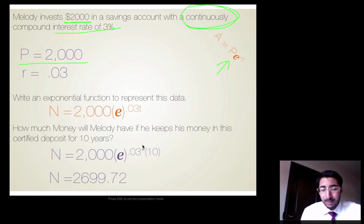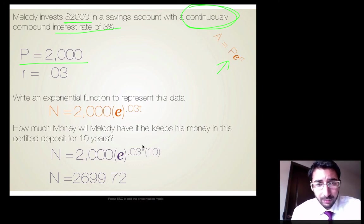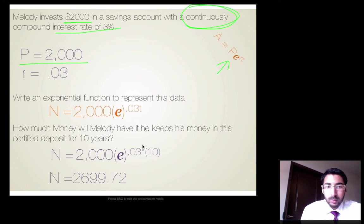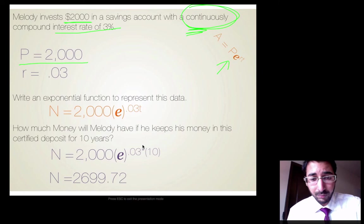Write an exponential function to represent this data. Well, we don't know what N is because we don't know what our final amount is. And we're going to set that equal to our principal, 2,000 multiplied by E because we know it's being continuously compounded. And it's going to be raised to the rate multiplied by the time. We don't know the time yet, but we do know what the rate is. And the rate is .03. So we have 2,000 times E raised to the .03 times T.